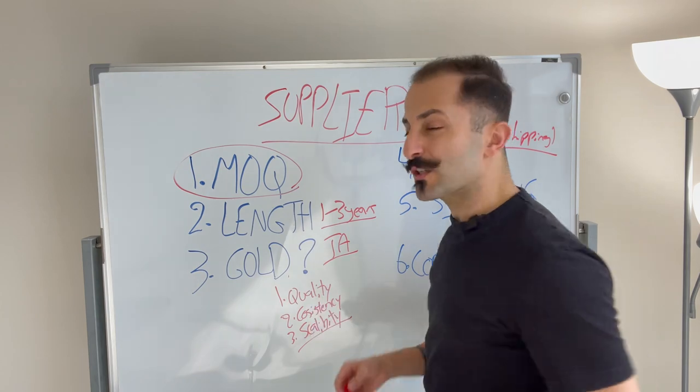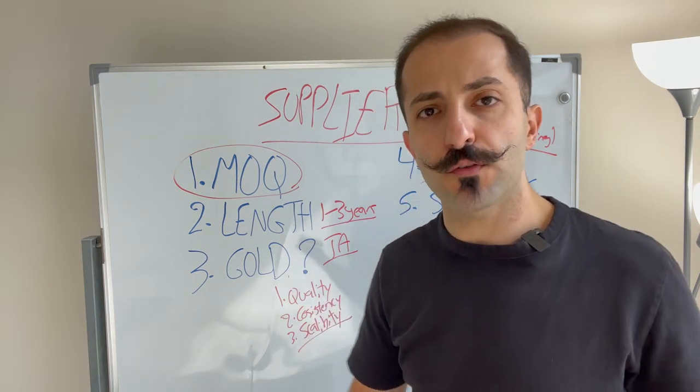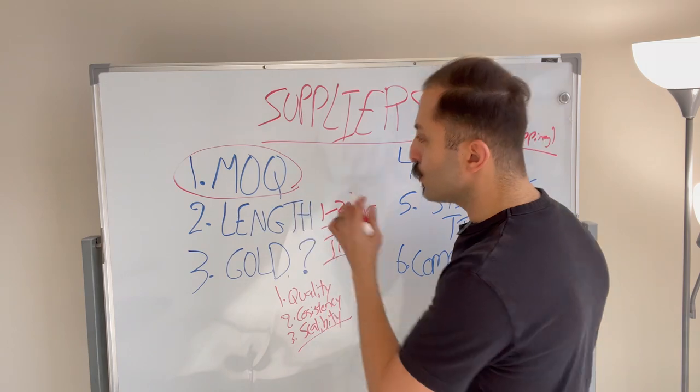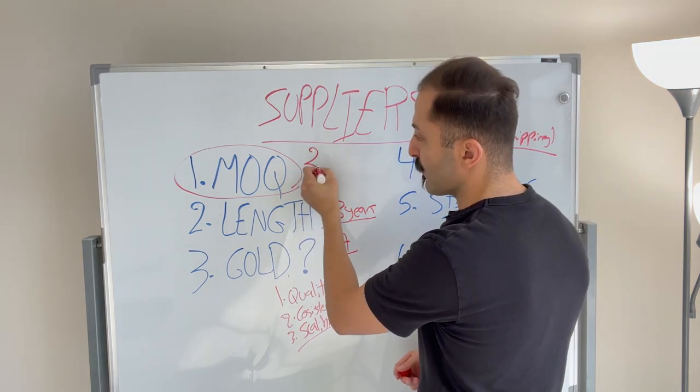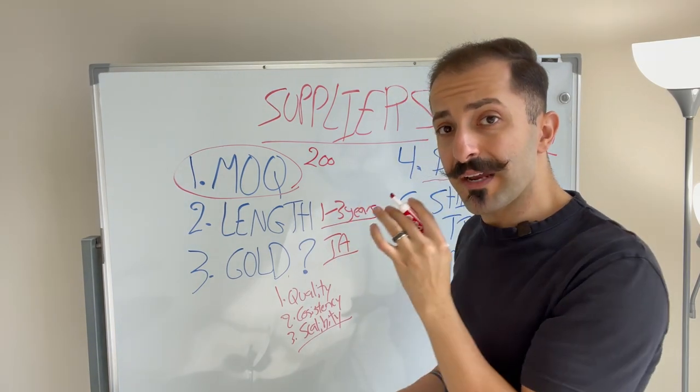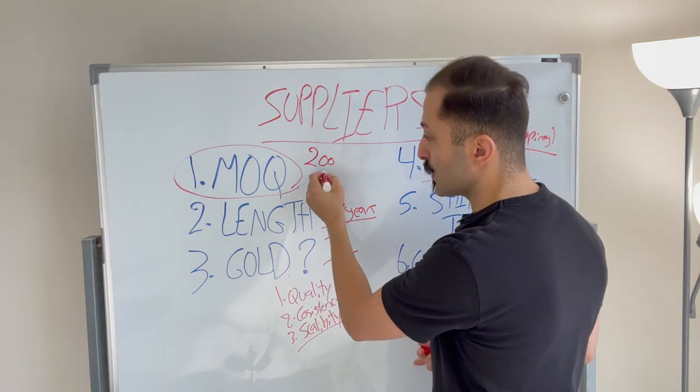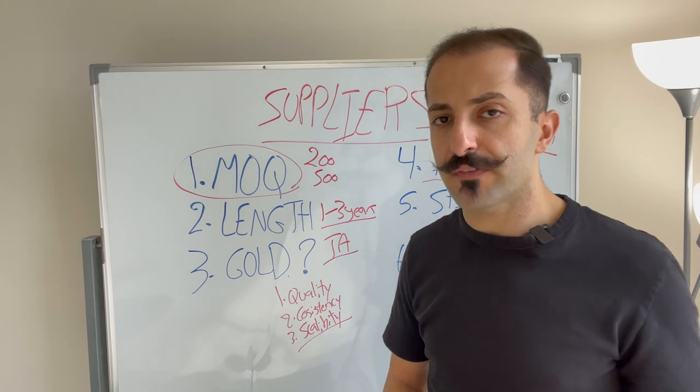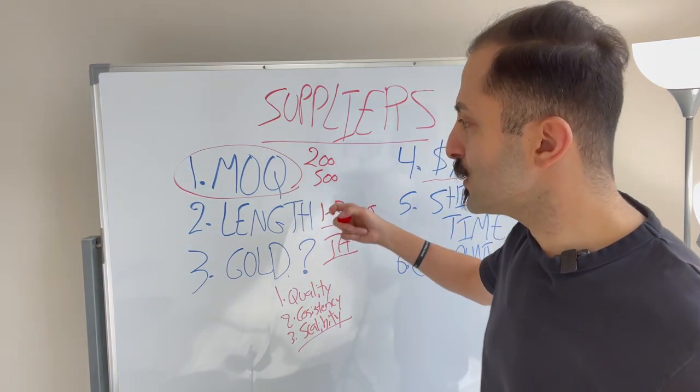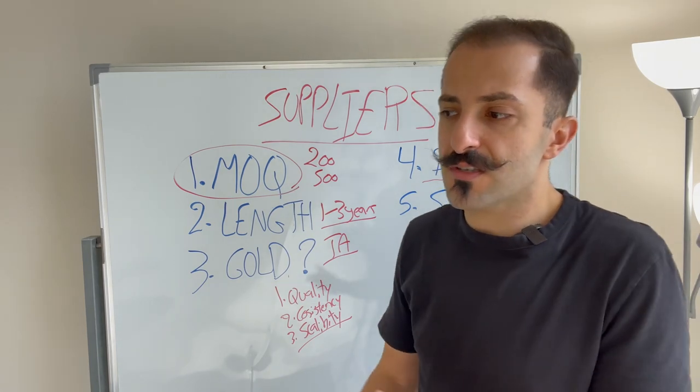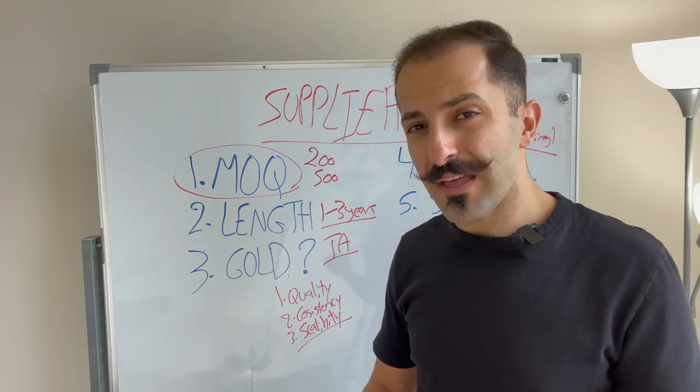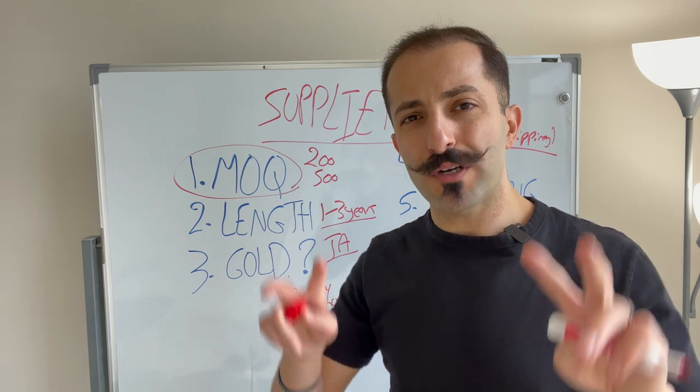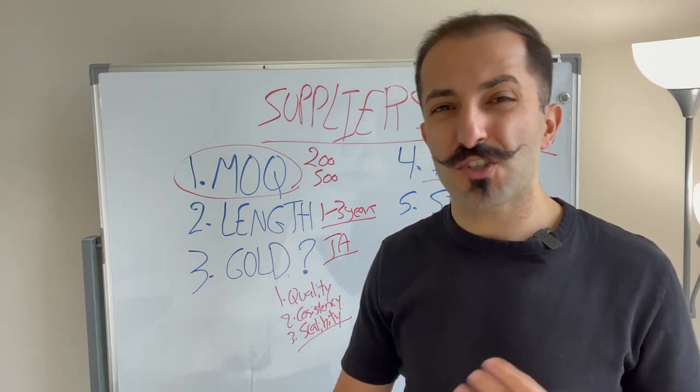So before we go to shipping, let's actually jump to MOQ. This is very important, especially if you're a brand new seller just starting out. You've got a few thousand dollars, you want to launch your first product, get your feet wet, test the waters and see how things are going. Usually most suppliers have an MOQ of 200. Now some of them might have an MOQ as high as 500 units. That means they will not manufacture a product for you unless you order 500 units. Usually from what I've seen, it's 200.